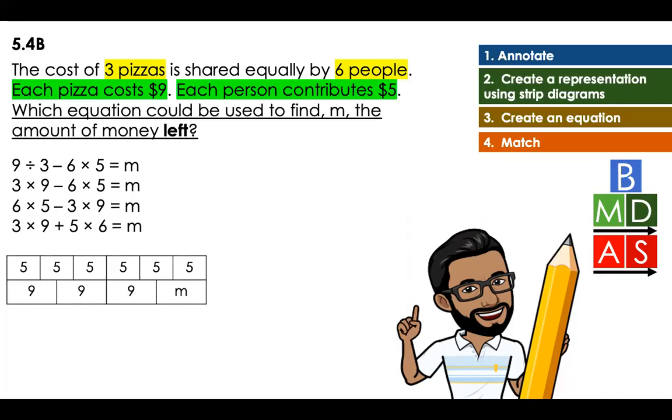My total in this case is the amount of people. There are six people, each of them gave $5. So that means that I have a total of 6 times 5. And then I'm going to subtract the amount that is going to be 9 times 3, or 3 times 9 actually, because we have three pizzas that each of them costs 9.